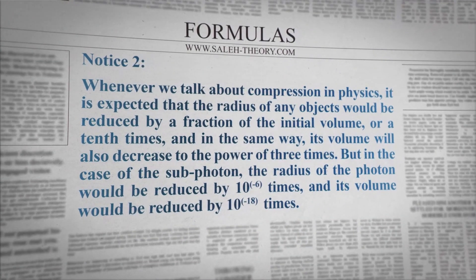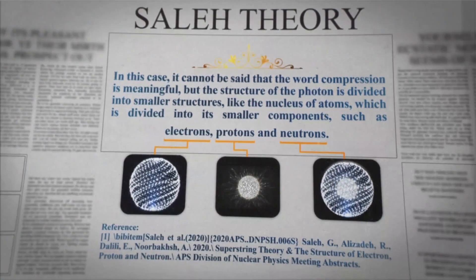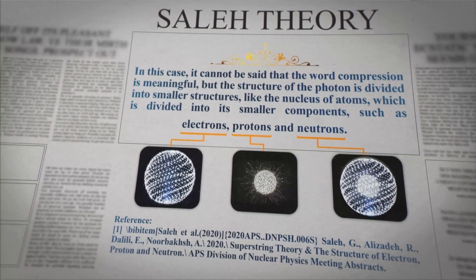Notice 2. Whenever we talk about compression in physics, it is expected that the radius of any object would be reduced by a fraction of the initial volume, or a tenth times, and in the same way its volume will also decrease to the power of three times. But in the case of the sub-photon, the radius of the photon would be reduced by 10 to the power of minus 6 times, and its volume would be reduced by 10 to the power of minus 18 times. In this case, it cannot be said that the word compression is meaningful, but rather the structure of the photon is divided into smaller structures — like the nucleus of atoms, which is divided into its smaller components such as electrons, protons, and neutrons.